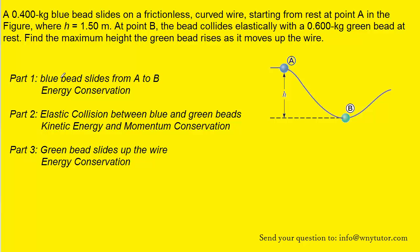In part one of the question, the blue bead will slide from point A to point B, and because it's sliding along a frictionless wire, energy conservation can be used. Then, once the blue bead slides to point B, it's going to collide elastically with the green bead, and because it's an elastic collision, both kinetic energy and momentum will be conserved.